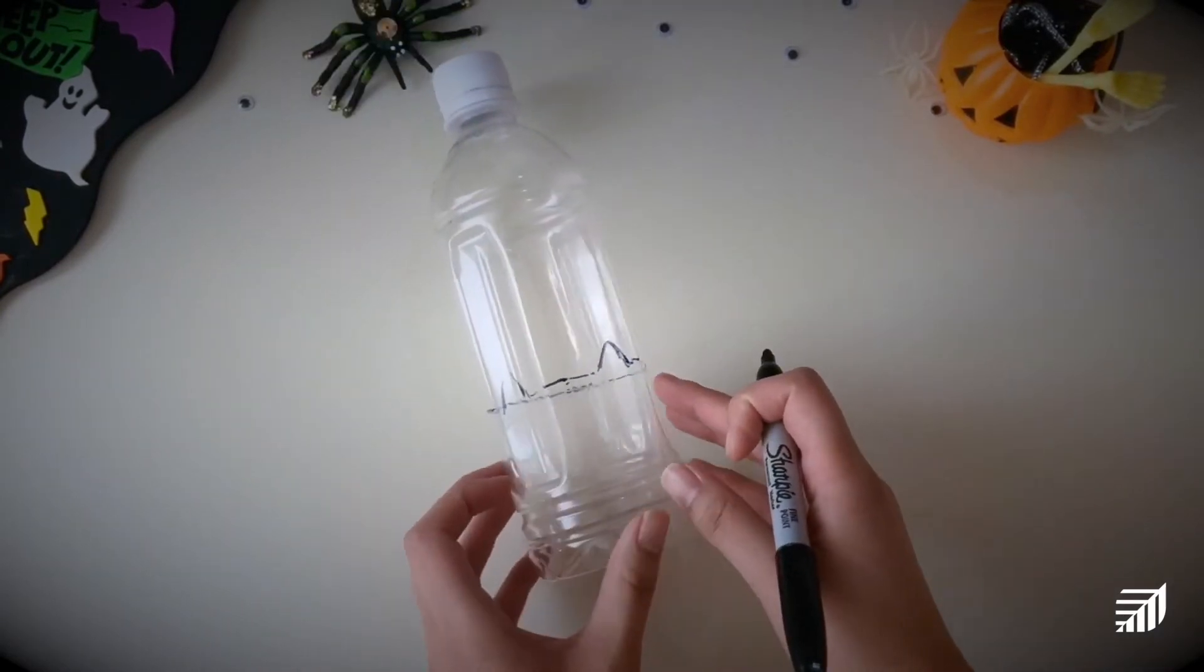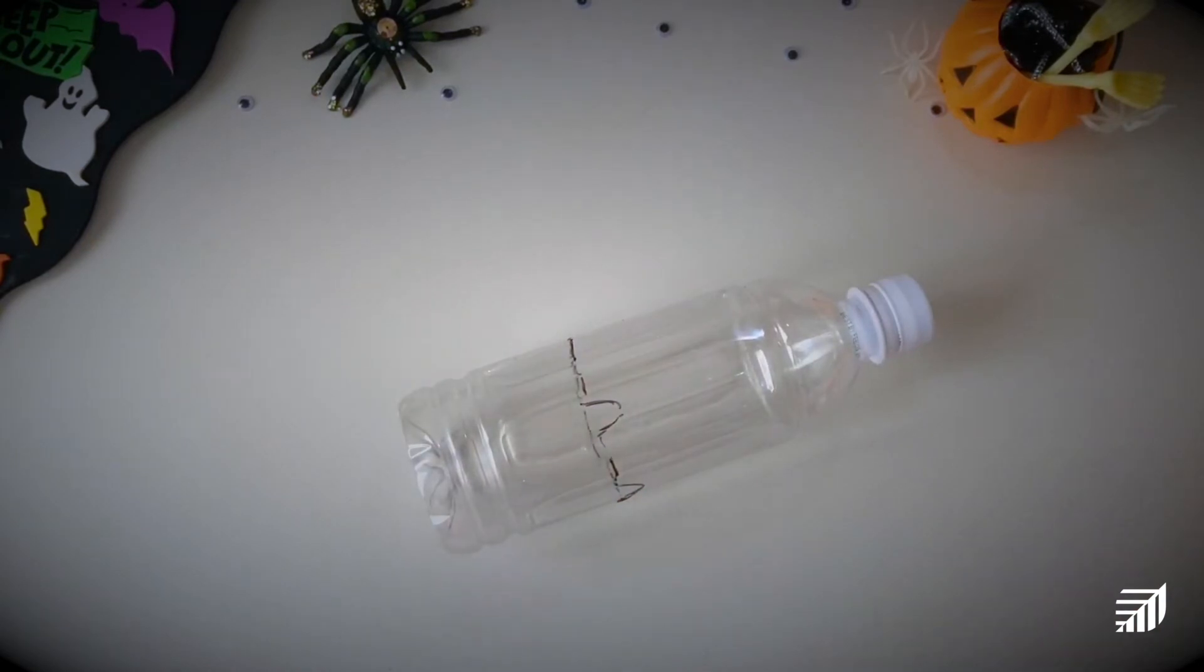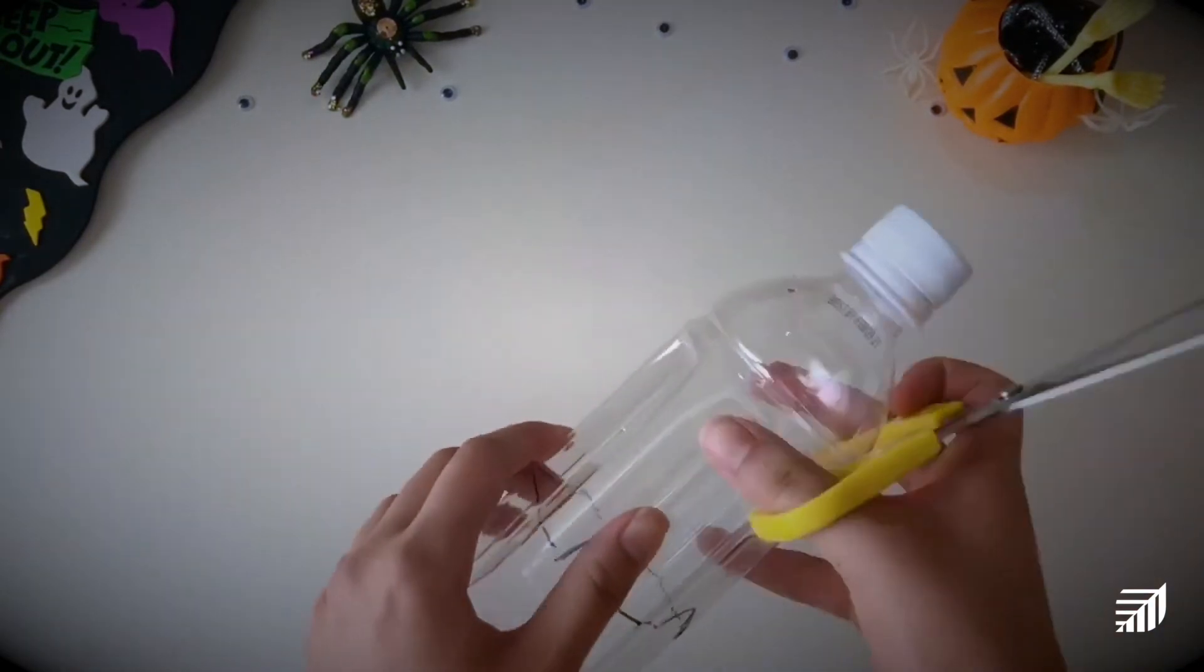Again, you'll want to get an adult's help for this next part. We're using our exacto knife to puncture the bottle and then from there we're going to cut out the shape.